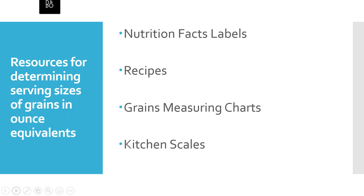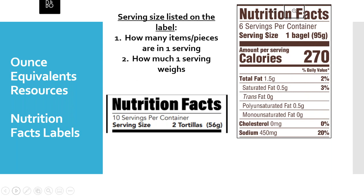Depending on the grain you want to serve and the method that works best for your program, to figure out serving sizes of grains in ounce equivalents you're going to need at least a couple of resources. First, let's take a look at nutrition facts labels. Nutrition facts labels are a great tool for determining how much to serve in ounce equivalents. You need to save nutrition facts labels for the grains you serve during the day until the very end of each operating day, and you'll need to provide these labels for all grain items served during the day of any monitoring visit or administrative review.